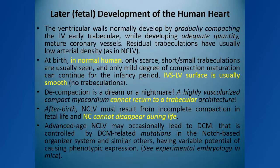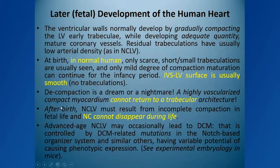Later in life, the ventricular walls normally increase in thickness by multiplication of existing cells, besides acquiring non-compact myocardium from trabeculations into the outer wall. In a normal human being at the end of the fetal period at birth, the ventricular anatomy is essentially established. The left side of the ventricular septum is smooth and clear of trabeculations. The rest may have minor trabeculations, but not a consistent layer of non-compact myocardium as we see in 20% of the normal population in our school study.